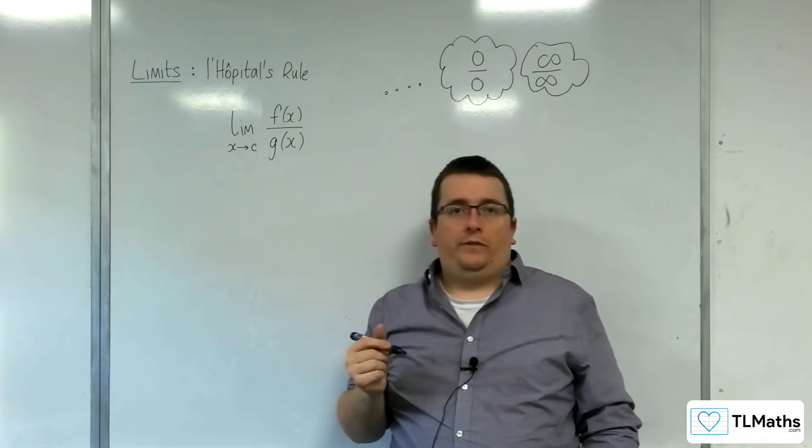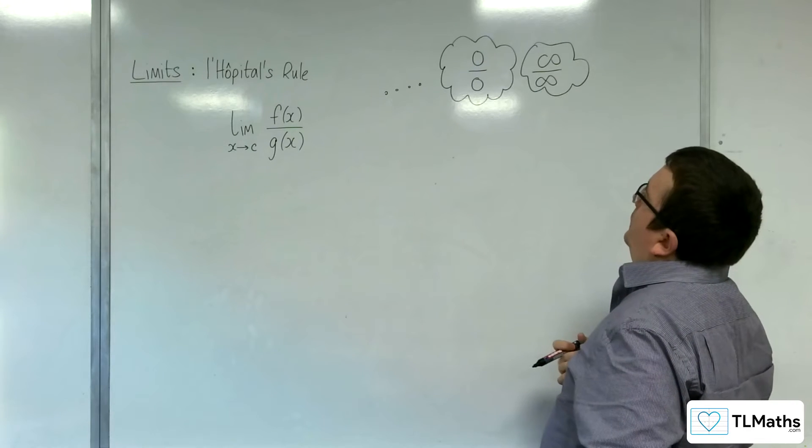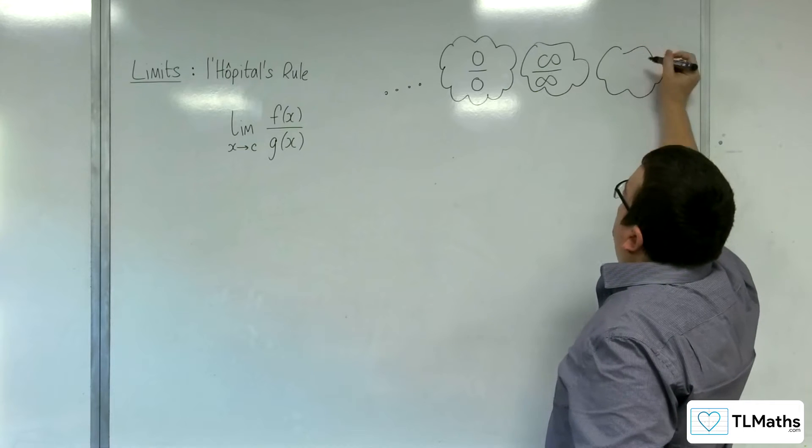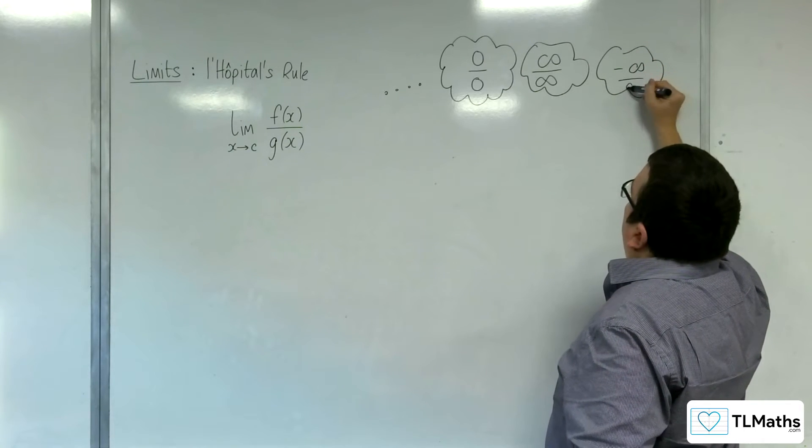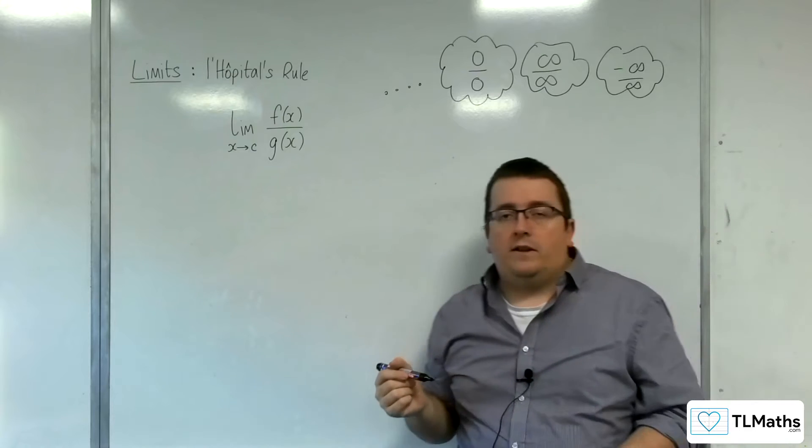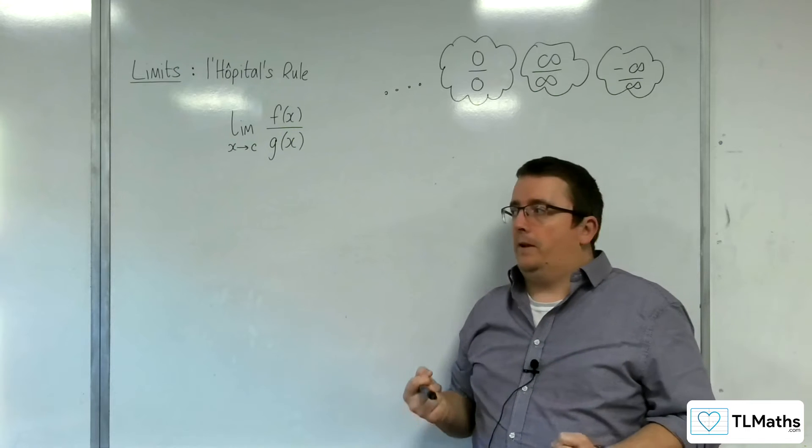So both functions are tending towards infinity when x is c. Or you could have minus infinity over minus infinity, or minus infinity over infinity. So these are indeterminate forms. We can't evaluate them as they stand.